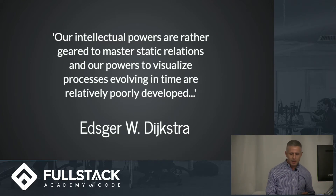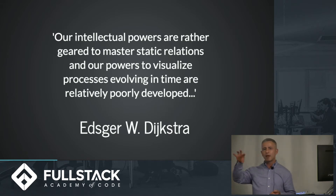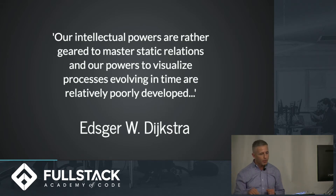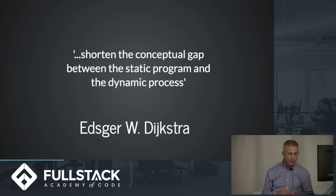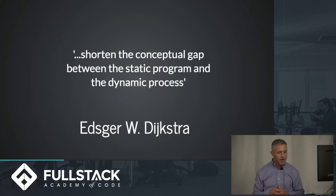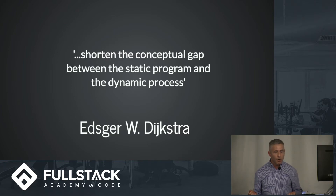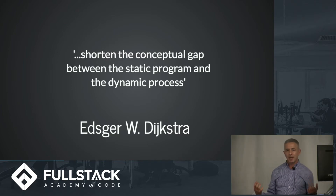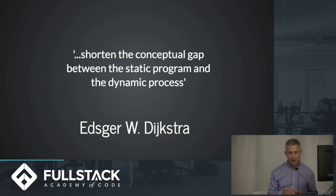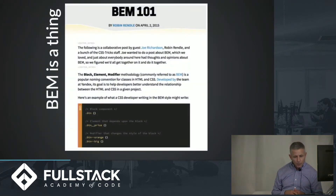Einstein kind of said it best too — we can distinguish the speed of something but not the location. It's really hard for our brains to work that way. To wrap it up, he said to shorten the conceptual gap — our job is to shorten the conceptual gap between the static program and the dynamic process. To us, that means getting stuff into scope. So just keep that in mind.